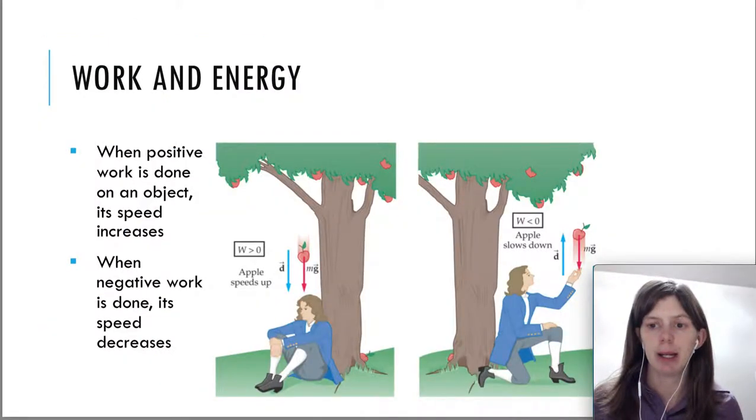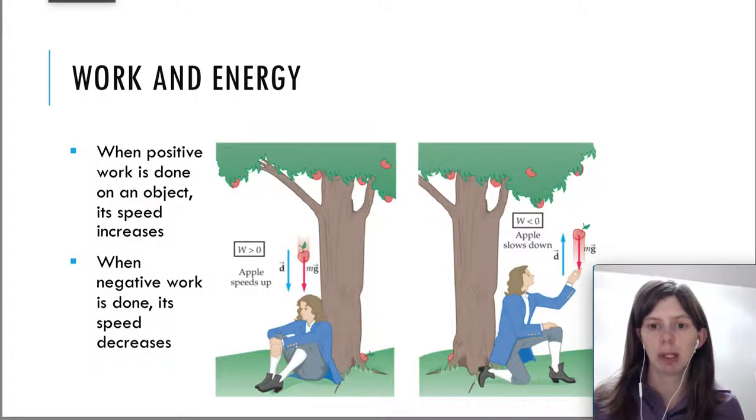So I have my next slide here that explains this conceptually. You've got a picture of Isaac Newton here. You've got an apple falling down. And so it's falling down because of the weight pulling it down, so the force and the displacement are in the same direction. We just learned in a previous video that means that the work done on that apple by gravity is positive. So we know that when the apple falls down, that it speeds up.